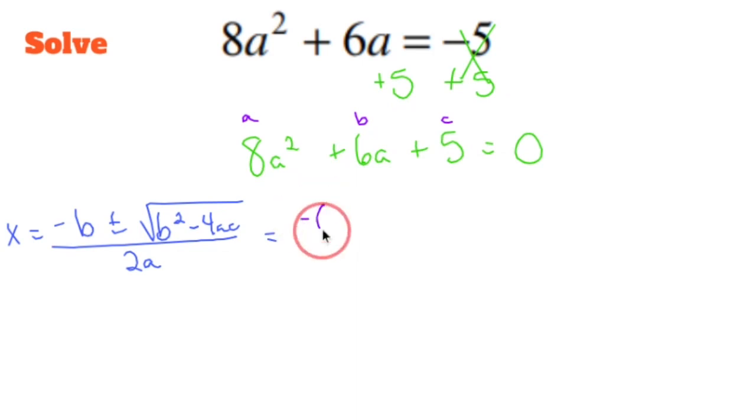Negative b is going to be negative 6 plus or minus square root. b squared is going to be 6 squared minus 4. a is going to be 8. c is going to be 5. Let's put it all over 2 times a, which is 2 times 8.